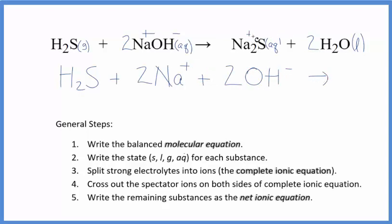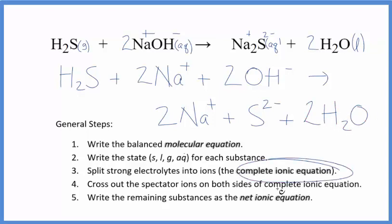For the products, we have sodium's positive, sulfide ion is 2 minus. So two sodium ions, just like in the reactants, and then the sulfide ion, that S2 minus. We don't split liquids apart in net ionic equations, so that'll just be 2H2O. This is the complete ionic equation.